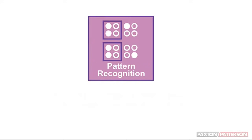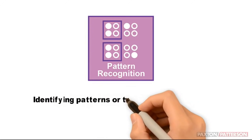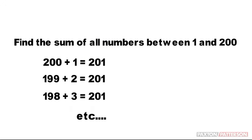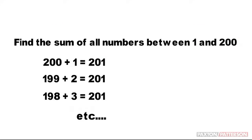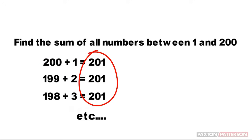Step two of the computational thinking process is pattern recognition — identifying patterns or trends within a problem. Let's return to the problem we started in step one: find the sum of all numbers between 1 and 200. What pattern do we see here? If we take the sum of the high number and the low number, we get 201. And all the other pairs have the same sum.